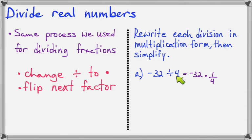In multiplication form it will be negative 32 times 1/4. See, these are the same problem, but this one is in division form and this one is in multiplication form. And now when I get ready to work it, of course 32 times 1 is 32 and 4 is in the denominator. This will simplify: 32 divided by 4 is 8, and it's a negative so it stays negative.